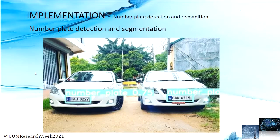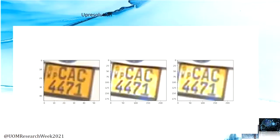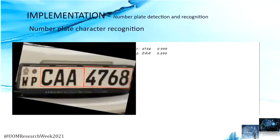This is the output of the number plate detection model, where the number plates are segmented. New preprocessing steps we included are de-skewing — if there is a skew, those images are corrected to enhance accuracy — and de-shadowing. Another new step is up-resolution: we increase the resolution of the image to improve the accuracy of optical character recognition. This is the number plate character recognition part, where the plate number is given as the final output.